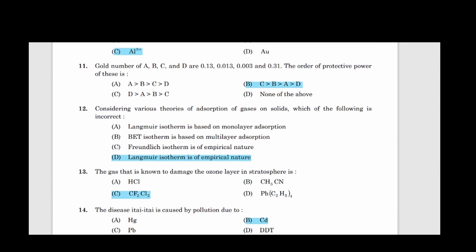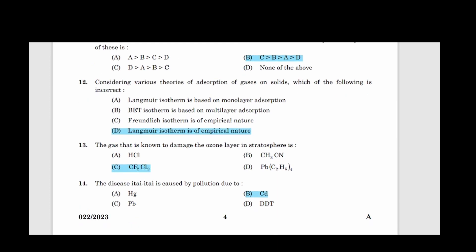Eleventh question: Gold number of A, B, C and D are 0.13, 0.013, 0.003 and 0.31. The order of protective power of these is. Correct answer option B: C greater than B greater than A greater than D. Twelfth question: Considering various theories of adsorption of gases on solids, which of the following is incorrect? Answer option D, Langmuir isotherm is of empirical nature.